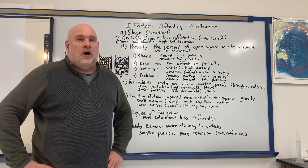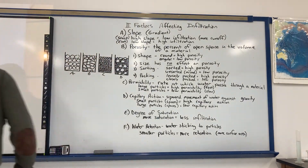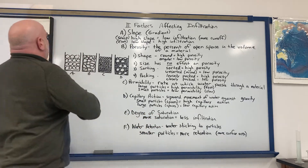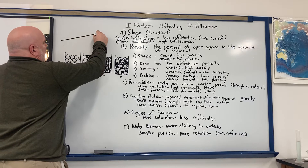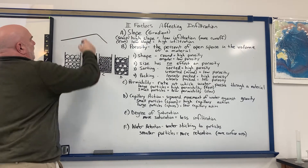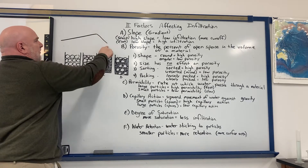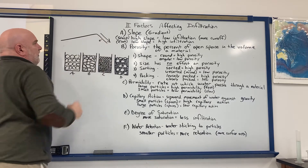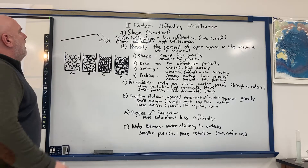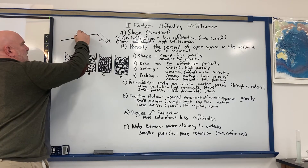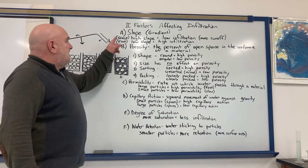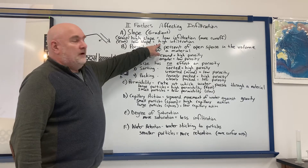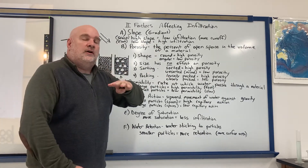The first factor is slope. If the land is steep versus flat — imagine a hill that's flat on one side and steep on the other — on the steeper side more water runs off and only a little infiltrates. Where the land is flatter, more water infiltrates and less runs off. So the steeper the slope, the less infiltration; the flatter the slope, the more infiltration.